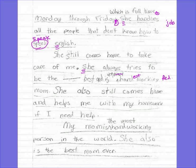'She also still comes home and helps me.' You just said 'still comes home' right up here — that's pretty redundant. Why don't we just say that she helps me with my homework if I need help; we don't need to repeat the coming home part. And then the ending says, 'My mom is the most hardworking — is the hardest working person in the world!' Need an exclamation point on that. 'She also is the best mom ever.' There's quite some hyperbole going on there at the end, but that's okay — it's her mom; you've got to say great things about your own mom.